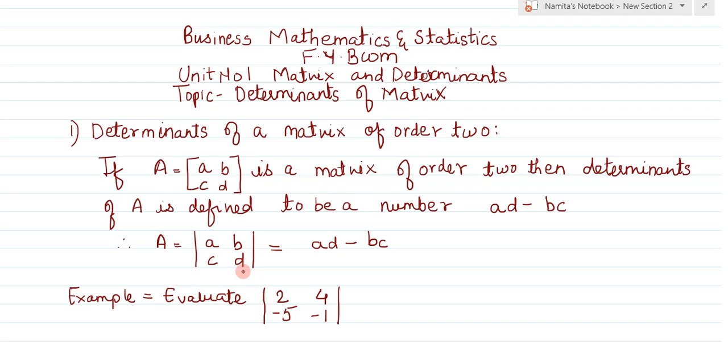The determinant equals a times d minus b times c. So the determinant of a matrix of order 2 is a times d minus b times c.